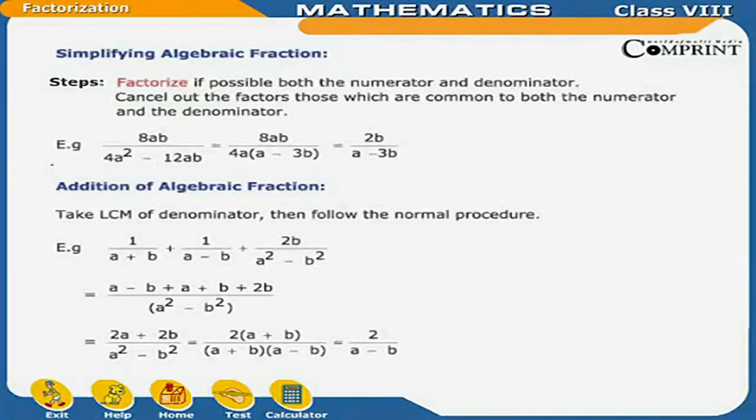Simplifying algebraic expression steps: Factorize if possible both the numerator and denominator. Cancel out the factors which are common to both the numerator and the denominator.